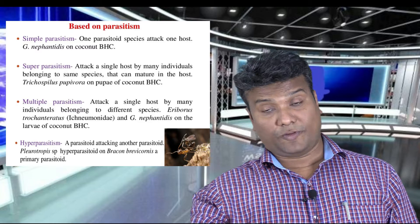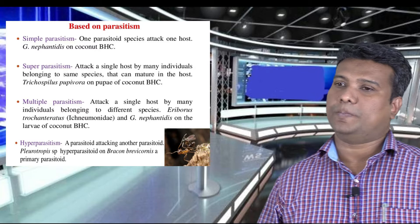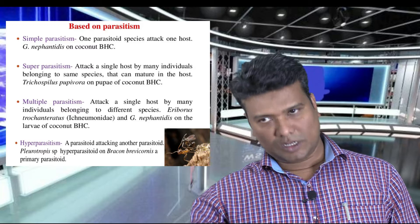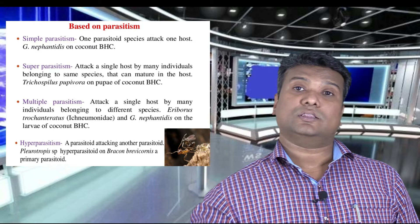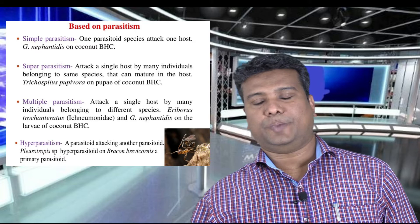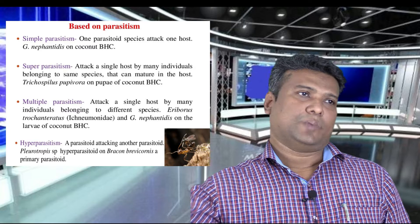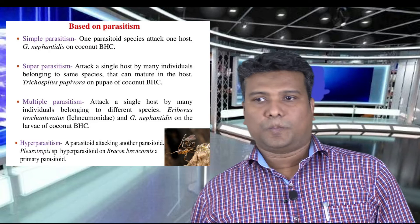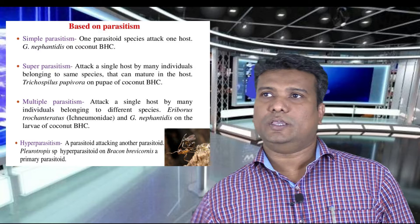The final one is a specialized type — hyper parasitism. In hyper parasitism, a parasitoid attacks another parasitoid. This is not useful in biological control because the parasitoid being attacked is the one controlling the pest, so it is a negative effect. The example is Perilampus species, which hyper-parasitizes Bracon barbicornis — the primary parasitoid. While Bracon barbicornis is a potent parasitoid working in agricultural ecosystems, Perilampus kills it, making it a negative effect.